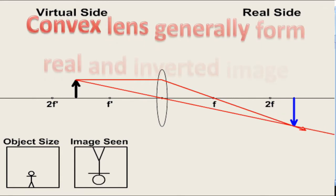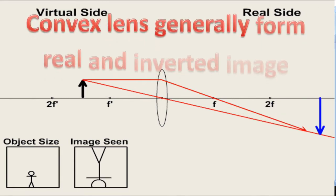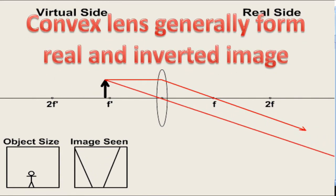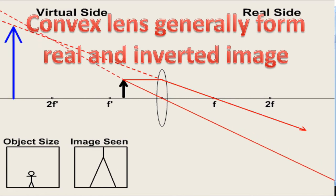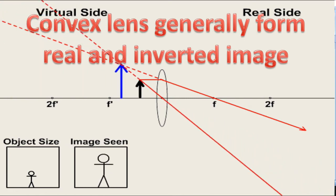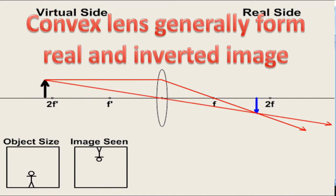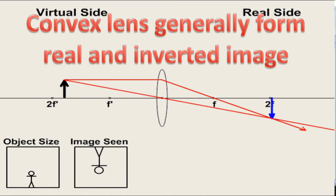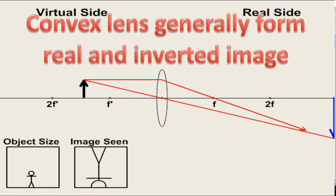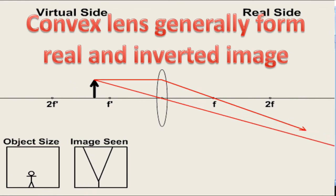Convex lens generally forms a real and inverted image because the image forms in just the opposite direction to the object relative to the lens. When the object comes closer, the image is formed magnified.